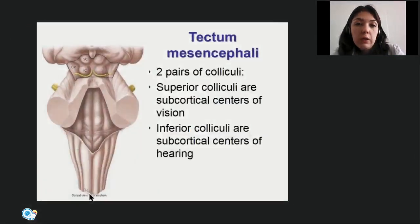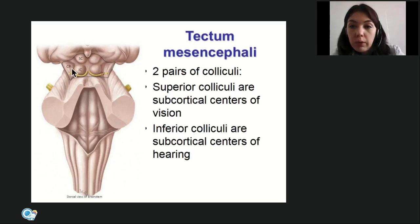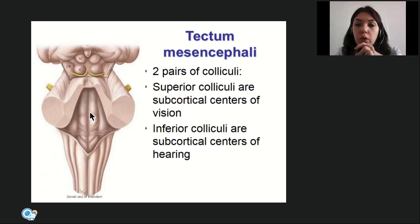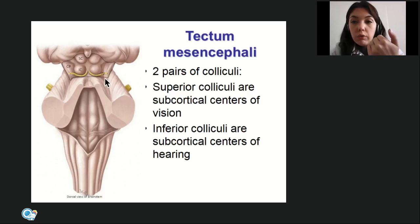In front of the posterior perforated substance are the mammillary bodies, which are parts of the diencephalon. From the dorsal surface, the tectum mesencephali is presented by two pairs of colliculi: superior colliculi are subcortical centers of vision, and inferior colliculi are subcortical centers of hearing. Between the two pairs of colliculi is the frenulum of the superior medullary velum, which is stretched between the two superior cerebellar peduncles and forms the anterior-superior part of the roof of the fourth ventricle. This area is also the exit point for the trochlear nerve (fourth pair) — the only cranial nerve arising from the dorsal surface of the brain stem.